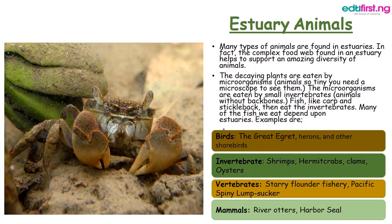Many types of animals are found in the estuary. The complex food web found in an estuary helps to support an amazing diversity of animals. Decaying plants are eaten by microorganisms — animals so tiny that you need a microscope to see them. Microorganisms are then eaten by small invertebrates, which are animals without a backbone. Fish like crab and stickleback then eat the invertebrates. Many of the fish we eat are dependent on estuaries.